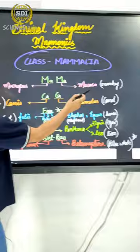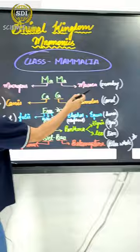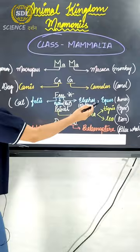Okay, then we will revise again. Macrobus, Makaka, Canis, Camelus, Phallus, Retus, Elephus, Equus, Panthera, that is Tigris, Leo.